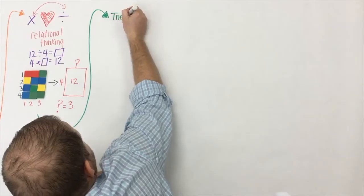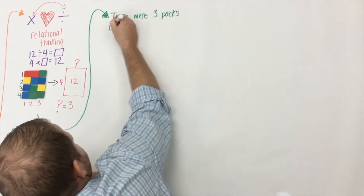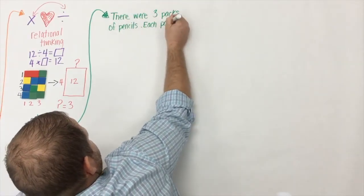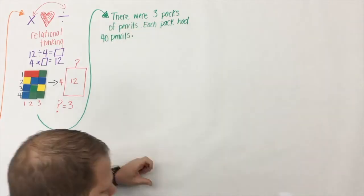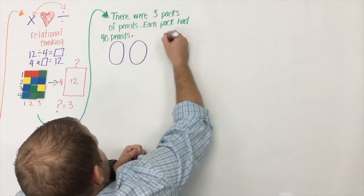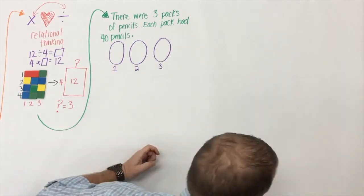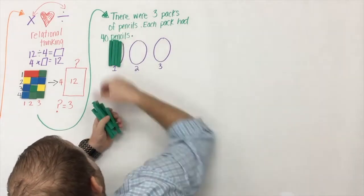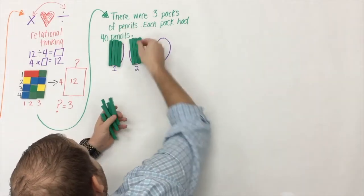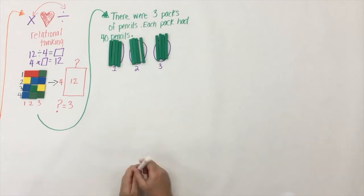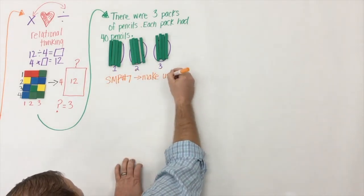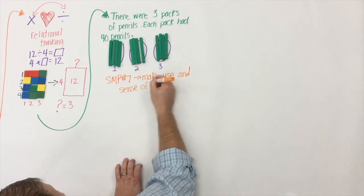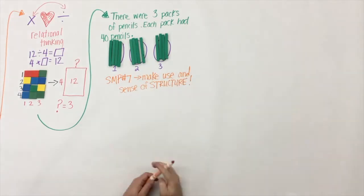Let's go back to context. Here's a simple one: there were three packs of pencils and each pack had 40 pencils. At the beginning of multiplication, students might draw three circles and in each circle put four ten-rods representing 40, or they could draw 40 little pencils. That's great, but the standards of mathematical practice — in particular number seven — want us to be efficient.